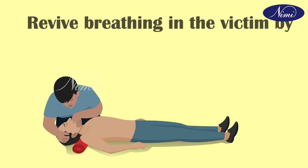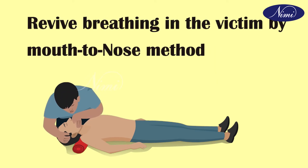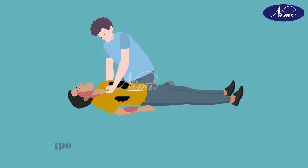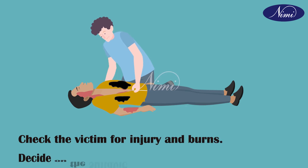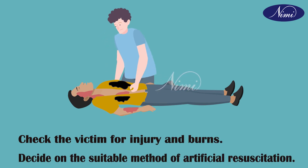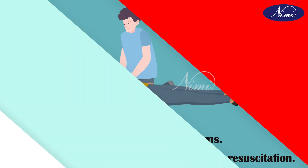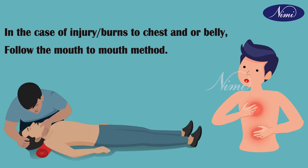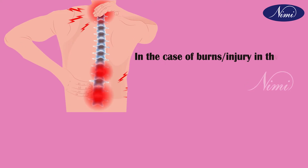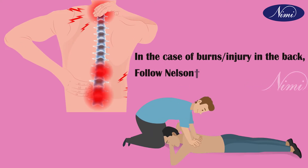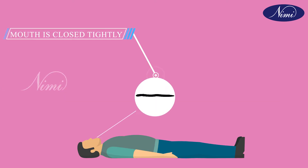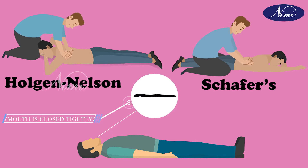Before starting artificial respiration, check the victim for injuries and burns and then decide on the suitable method of artificial resuscitation. In the case of injury or burns to the chest and/or belly, follow the mouth-to-mouth method. In cases of burns or injuries in the back, follow Nelson's method. In case the mouth is closed tightly, use Scuffer's or Holger Nielsen's method.